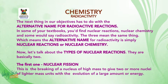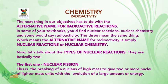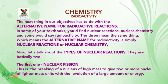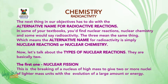The next objective has to do with the alternative name for radioactive reactions. In some textbooks you will find 'nuclear reactions,' 'nuclear chemistry,' and some will say 'radioactivity.' The three mean the same thing, which means an alternative name for radioactivity is simply nuclear reactions or nuclear chemistry.